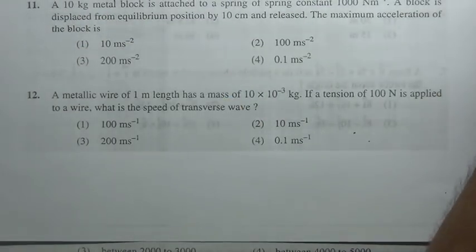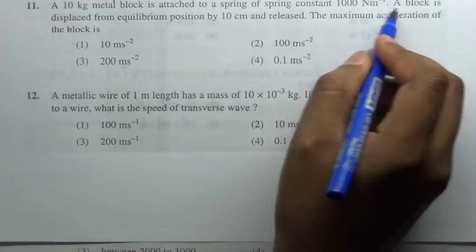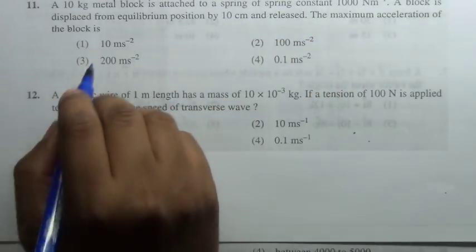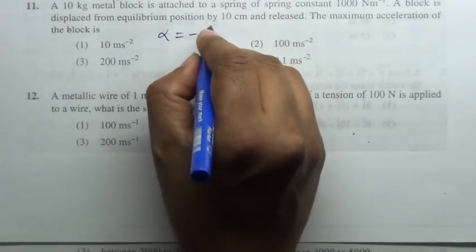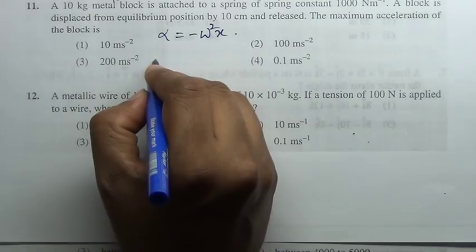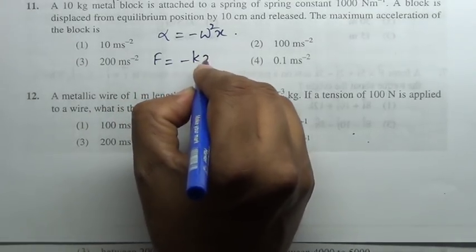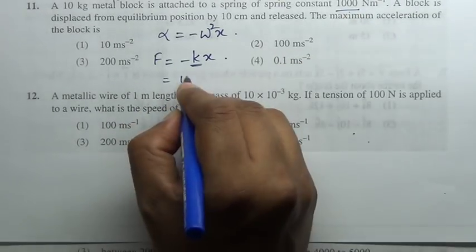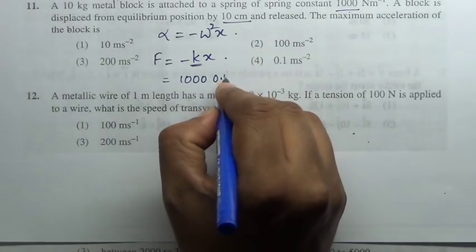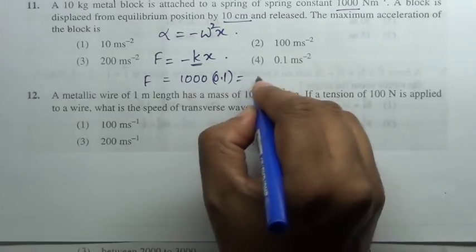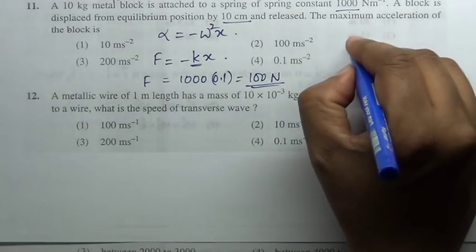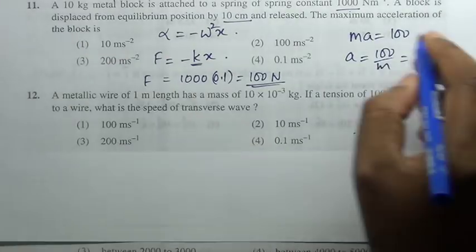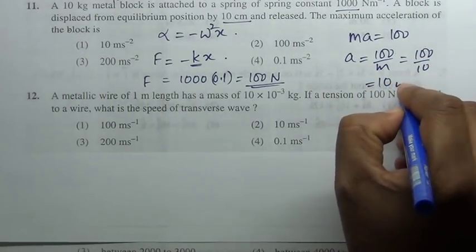A 10 kg metal block is attached to a spring of spring constant given. Block is displaced from equilibrium position by 10 centimeter and then released. Maximum acceleration of the block: acceleration of the block is given by minus omega square x, and restoring force is given by minus k into x. k is 1000, x is 10 centimeter that is 0.1. Therefore restoring force equal to 100 newton. But mass into acceleration is 100. Acceleration is 100 by mass. Mass is 10 kg, 100 by 10 is 10 meter per second square.